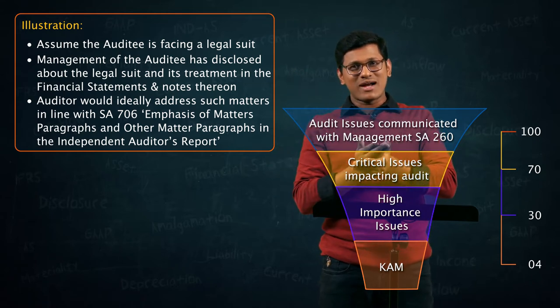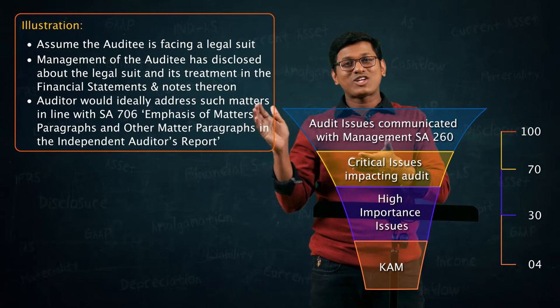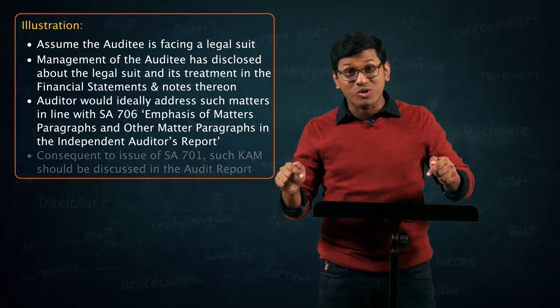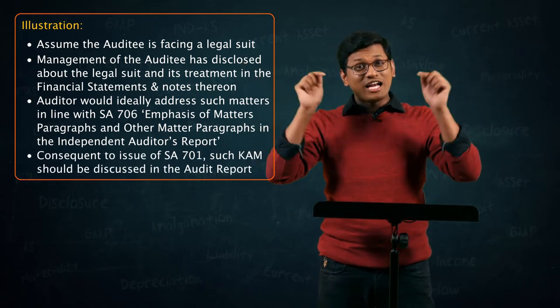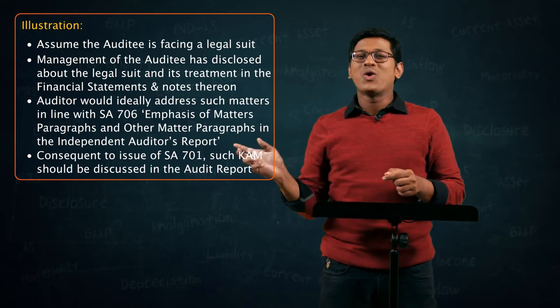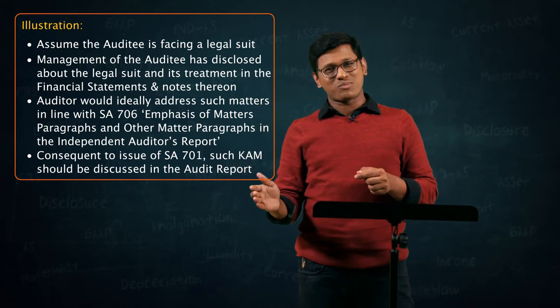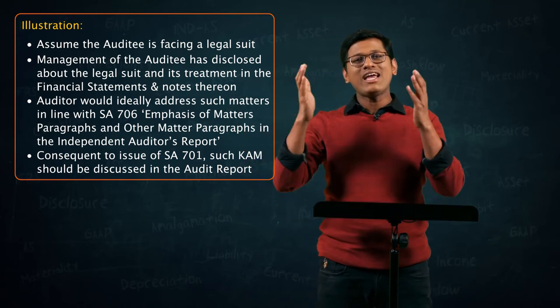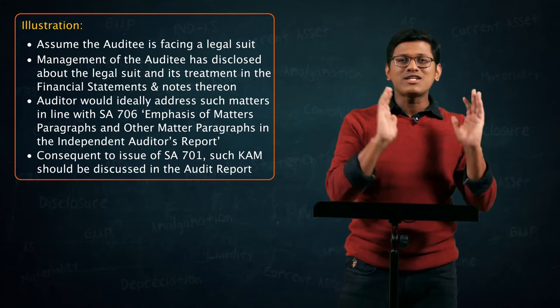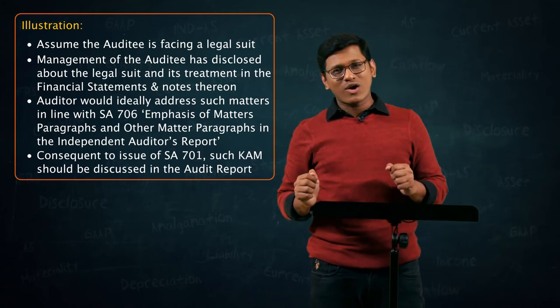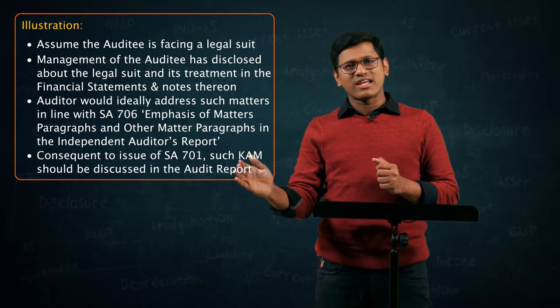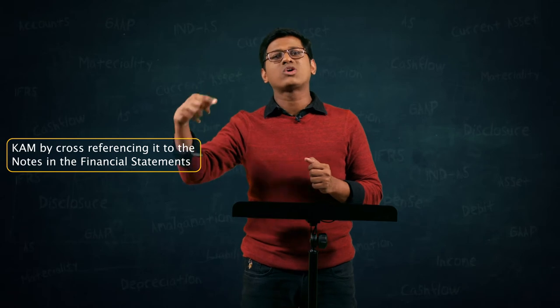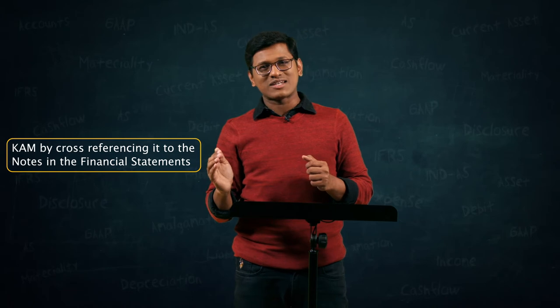These key audit matters must now be discussed in the auditor's report — this is a new requirement that did not exist earlier. In the auditor's report, below the basis for opinion paragraph, you include something called the key audit matters paragraph. What do you give in it? For example: there is a legal case pending against the company, as per note 30 to the financial statements. You give reference to the relevant note in the financial statements.